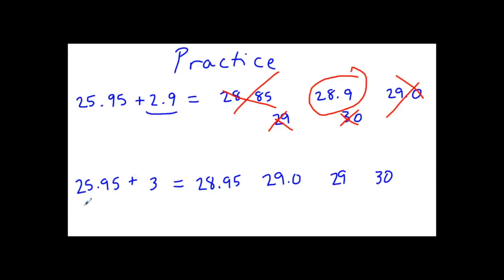Let's try the second example: 25.95 plus 3. 3 is the least precise measurement with no numbers past the decimal. So your answer should have no digits past the decimal.